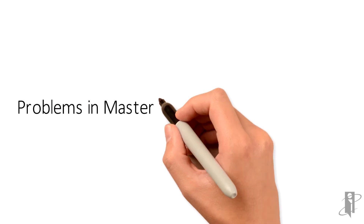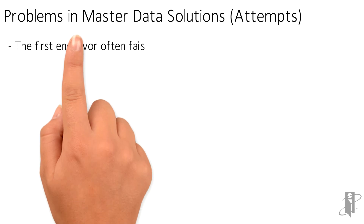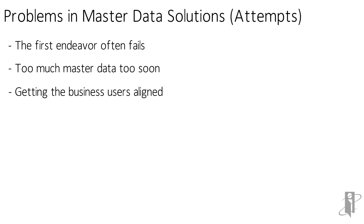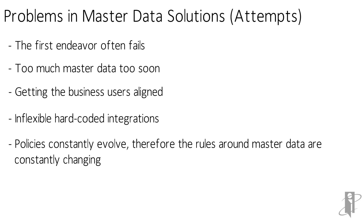Managing master data has had some failures, and here are some of the challenges. The fact is that the first master data undertaking often fails. The most common reason is that companies tend to want to bite off more than they can chew. Then there's the challenge of getting everyone to agree on something as simple as a name. The data, especially if it's derived, can produce integrations that become unmanageable. Factor in that policies and procedures are continually advancing, and you can imagine there are several potential points of failure.